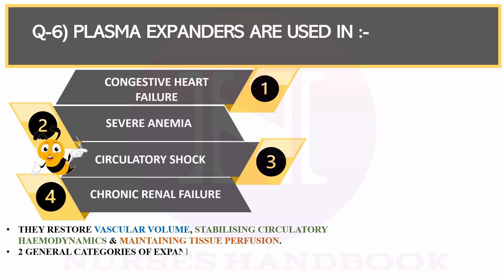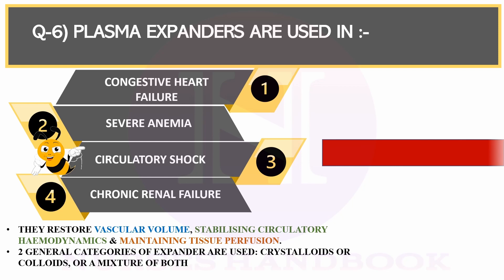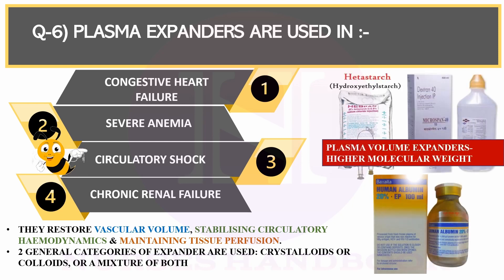There are two general categories of plasma expanders: the first is crystalloids and the second is colloids. A mixture of both crystalloids and colloids is also available. Examples of plasma volume expanders are Dextran-40, Hydroxyethyl starch, and human albumin.